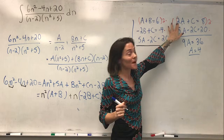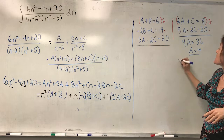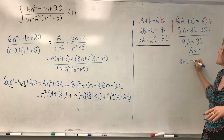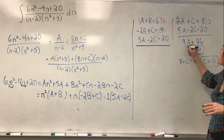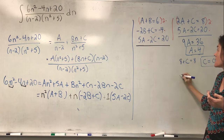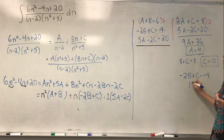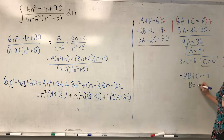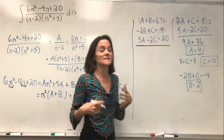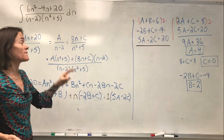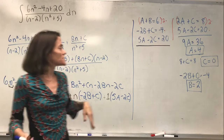I go back to the equation relating A and C. Plugging A equals 4 in: 8 plus C equals 8, so C equals 0. Then from the second equation, minus 2B plus 0 equals minus 4, so B equals 2. This was the algebra of partial fractions. We have found A is 4, C is 0, B is 2.